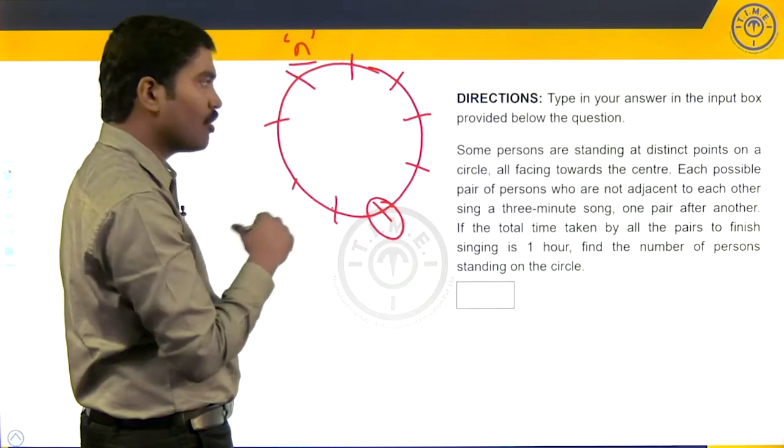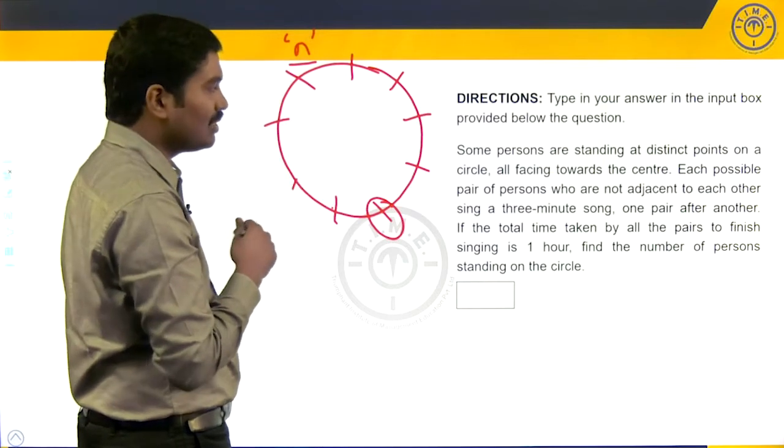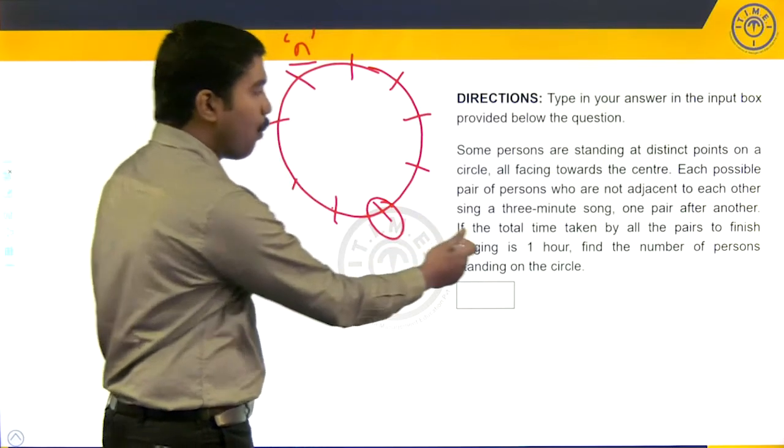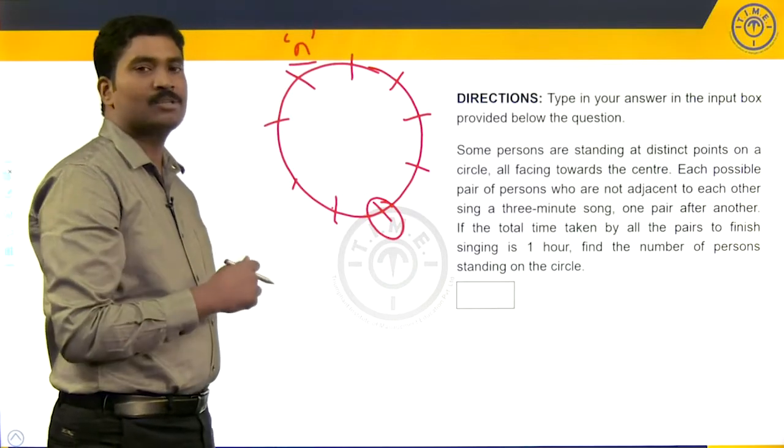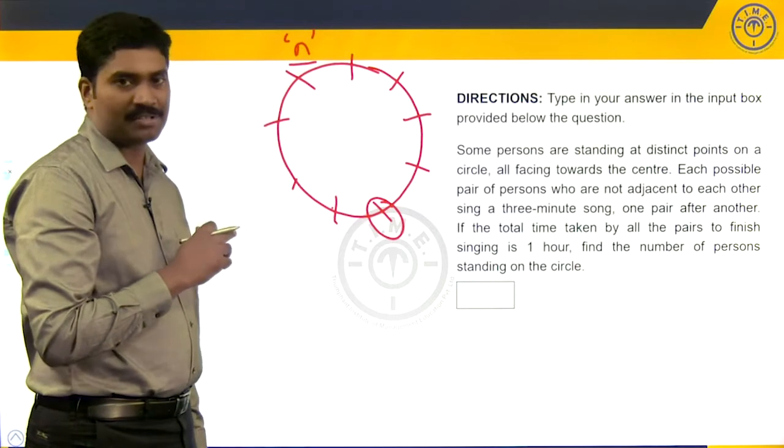Each pair sings a song for how long? For three minutes and it took a total of one hour for everyone to finish singing. Three-minute songs, 60 minutes means there were a total of 20 pairs, right?